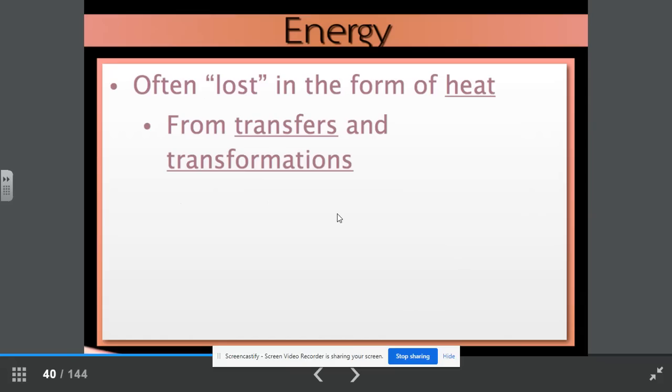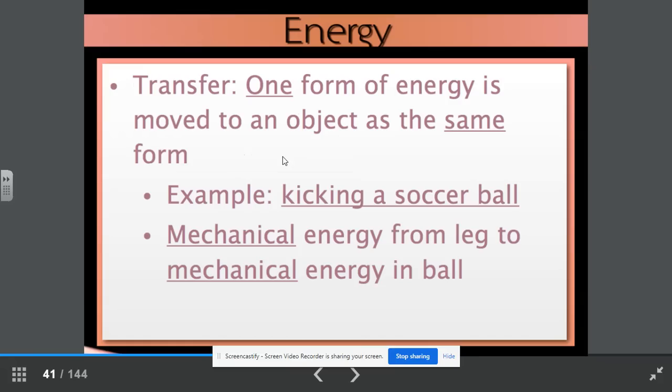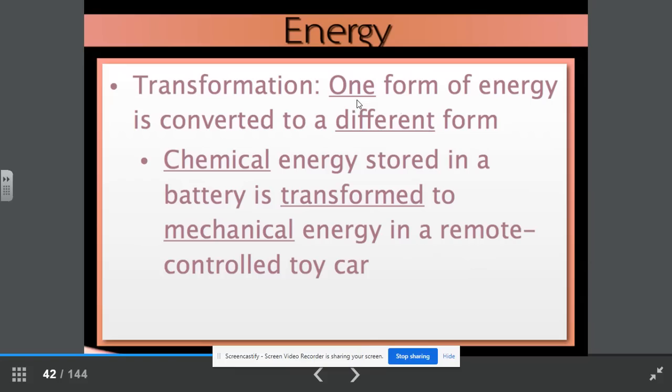Often energy is lost in the form of heat from transfers and transformations. Transfer. One form of energy is moved to an object as the same form. So an example, kicking a soccer ball. The mechanical energy from your leg is moved to the mechanical energy in the ball. Transformation is when we have one form of energy is converted to a different form. For example, chemical energy stored in a battery is transformed to mechanical energy in a remote control toy car.